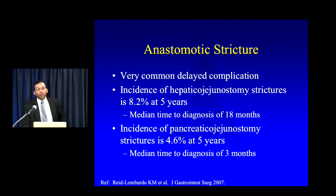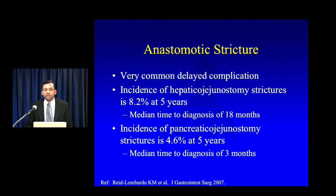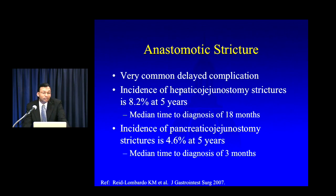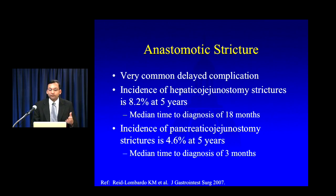In the chronic setting, one of the complications you have to think about is anastomotic stricture — a pretty common delayed complication, both at the hepaticojejunostomy and to a lesser extent at the pancreaticojejunostomy. The timeframes are important to know: pancreaticojejunal strictures tend to occur pretty early, with a median time to diagnosis of about three months, so you're going to see this on their immediate postoperative follow-up or a couple of follow-ups down the line. Hepaticojejunostomy strictures take longer to develop — 18 months to two years — so this is something you'll be looking at years down the line.